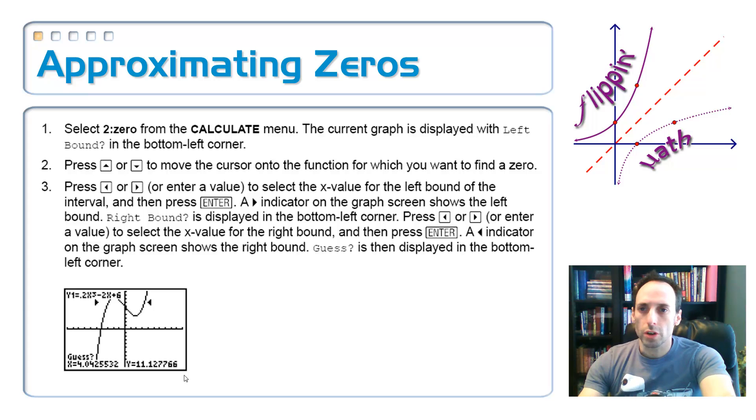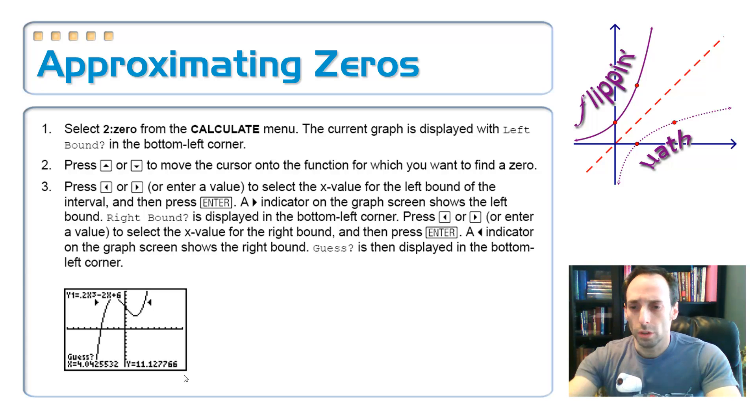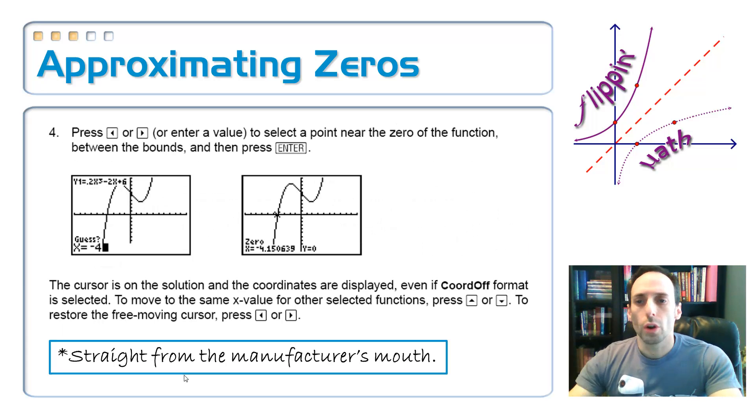Okay, so here are some instructions for approximating zeros on your graphing calculator. So let me speed read through this for you. Number one: Select 2:zero from the calculate menu. The current graph is displayed with left bound in the bottom left corner. Press up arrow or down arrow to move the cursor to the function you want to find the zero. Number three: Press left arrow or right arrow or enter a value to select the x value for the left bound of the interval, and then press enter. A right arrow indicator on the graph screen shows the left bound. Right bound is displayed in the bottom left corner. Press left arrow or right arrow or enter a value to select the x value for the right bound, then press enter. A right arrow indicator on the graph screen shows the right bound. Guess is then displayed in the bottom left corner. Number four: press left arrow or right arrow or enter a value to select a point near the zero of the function between the bounds and then press enter. The cursor is on the solution and the coordinates are displayed. Straight from the manufacturer's mouth.